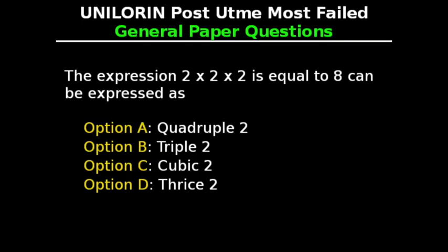General Paper Questions. This question says: The expression 2 times 2 times 2 equals 8 can be expressed as — Option A: quadruple 2, Option B: triple 2, Option C: cubic 2, Option D: thrice 2. The correct answer to this question is Option C, cubic 2.